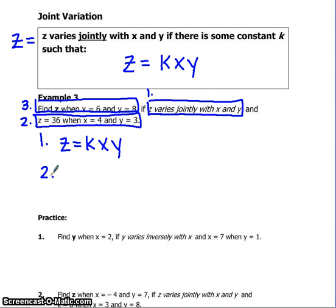Step 2. Fill in our given information. Z equals 36, K times X equals 4, and Y equals 3. Simplify a bit. 36 equals K times 12. Divide by 12 and we would get K equals 3.